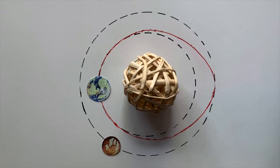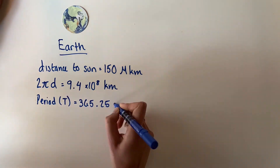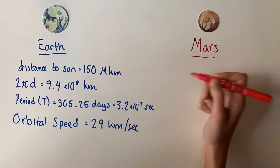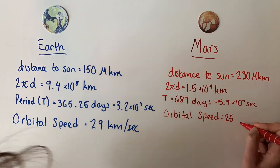Imagine we're at the Earth's orbit and we want to travel to Mars. First, we draw our transfer orbit as an ellipse, with Earth's orbit at one end and Mars's orbit at the other. Next, we can compute the two different speed changes it will take to get us from one orbit, to the transfer orbit, to the final orbit. When we use the radius of the Earth's orbit and the length of an Earth year, we see that its orbital speed is 29 kilometers per second. When we solve the same equations for Mars, we get an orbital speed of 25 kilometers per second.